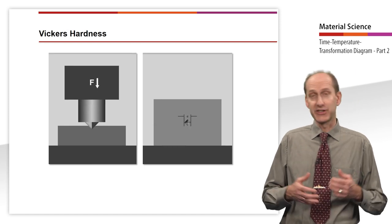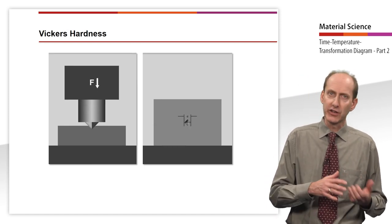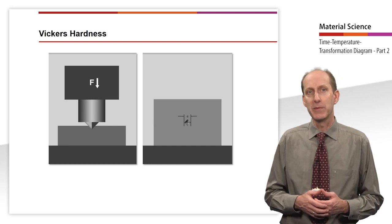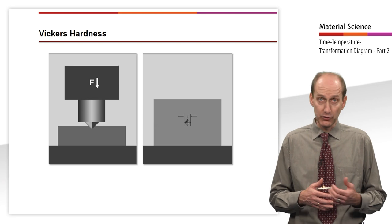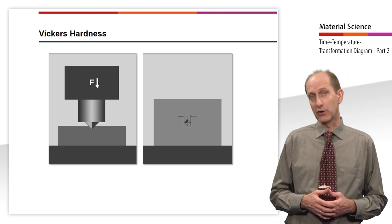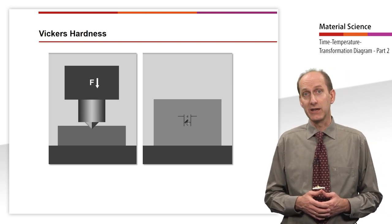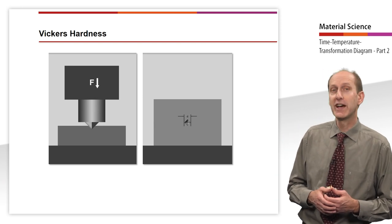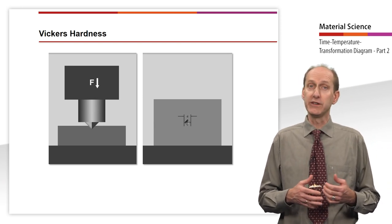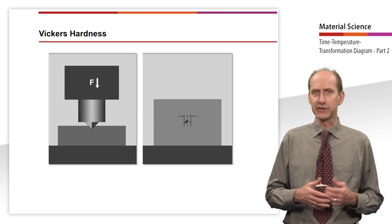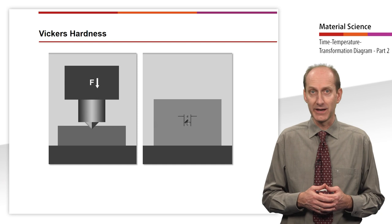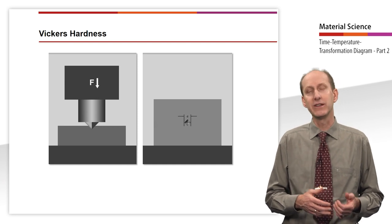The Vickers hardness test is used for thin sheets, thin layers and workpieces made of uniformly structured materials. Here, too, the surface must be ground flat. The indenter is a four-sided pyramid of diamond with a point angle of 136 degrees. The two diagonals of the square indentation are measured and averaged.